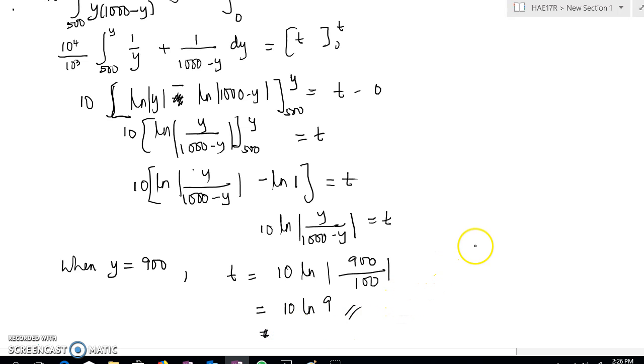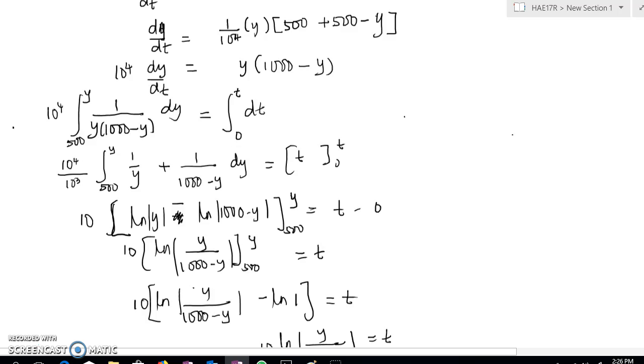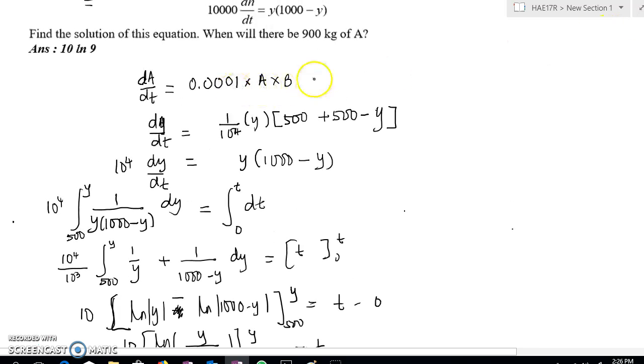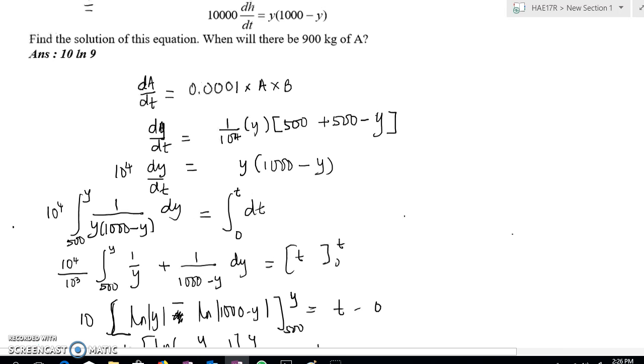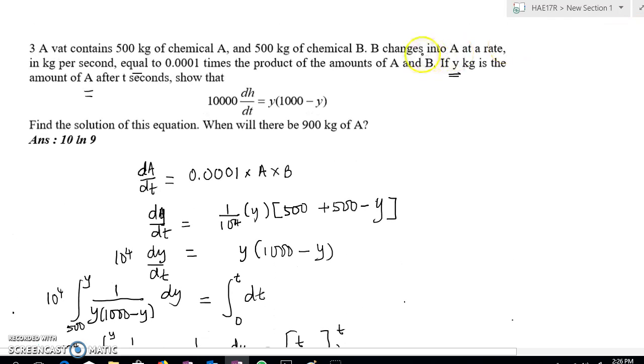Okay, so the hardest part of this question is basically writing down the differential equation, that's a bit tough. Some of you may not see, so actually B changes to A, so we are talking like dA/dt equals to this times the product A and B. We cannot leave in terms of B because our variable is A or Y.